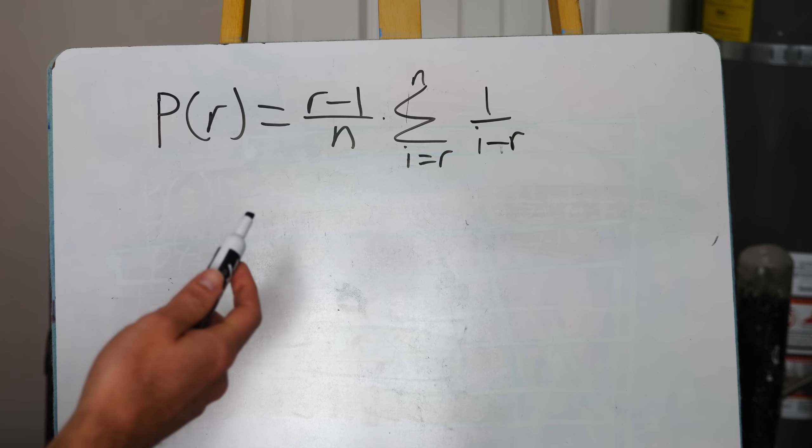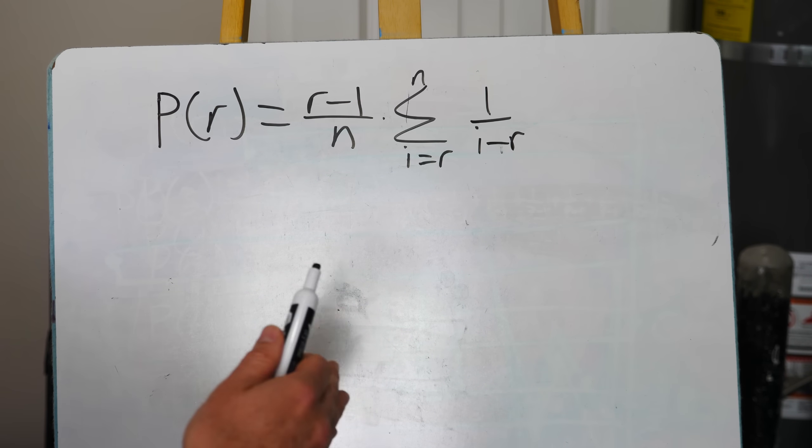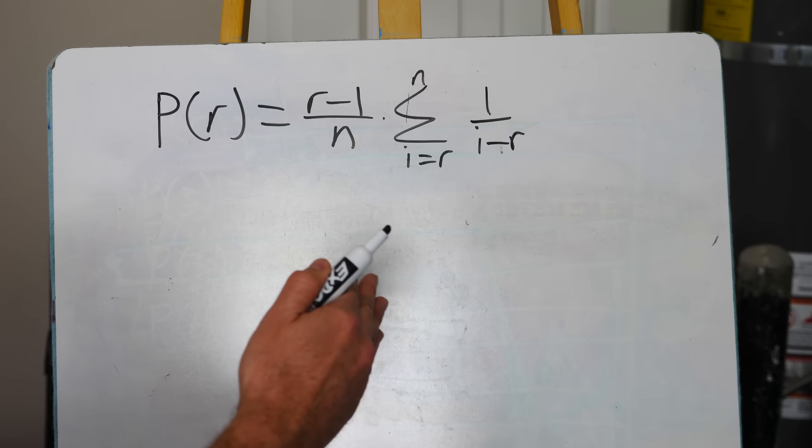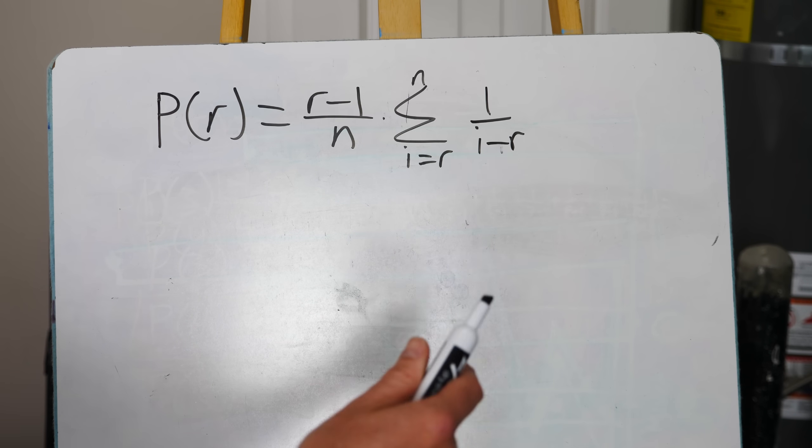And also you don't know who all the people are that you could possibly date. You just know who you're currently dating and whether or not you're going to select them or not. And you can use this equation in dating to find the number of people you should reject until you finally get married. And it turns out to be, for example, if we make it easy and make N equal to 10, so you're going to date 10 people in your life, how many people should you reject until you finally decide this is the person that you should marry and settle down with?